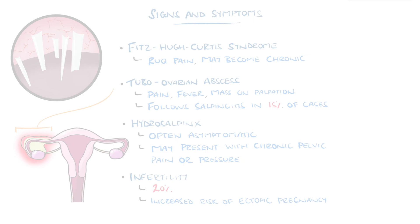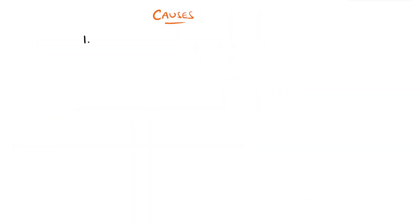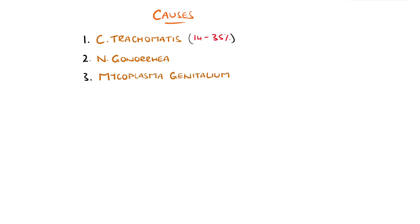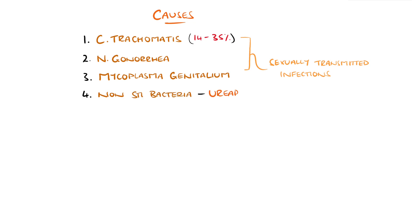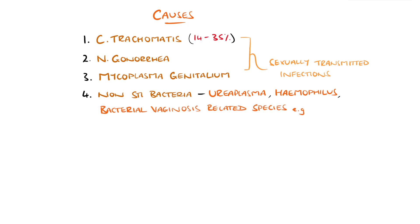PID is traditionally thought to be caused by sexually transmitted organisms such as Chlamydia trachomatis — believed to cause between 14% and 35% of cases — Neisseria gonorrhea, and Mycoplasma genitalium, alongside various anaerobic and aerobic bacteria often associated with bacterial vaginosis, for example Gardnerella. Others include Ureaplasma, Haemophilus, and enteric gram negatives.